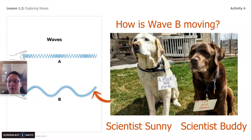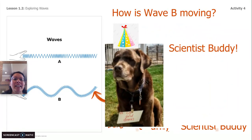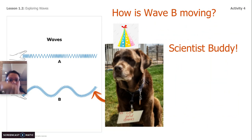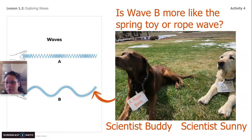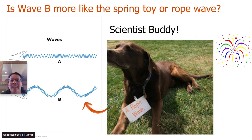So wave B — how is wave B moving? Scientist Sunny said it's going back and forth. Scientist Buddy said wave B is going up and down. Scientist Buddy is correct — that wave is going up and down, up and down. So is wave B more like the spring toy or the rope wave? Scientist Buddy said he thinks it's the rope wave, and Scientist Sunny thinks it's the spring toy. Scientist Buddy is correct — because wave B is moving up and down, it looks more like the rope.